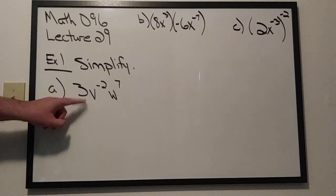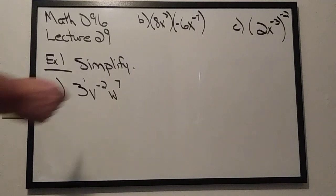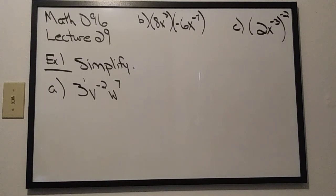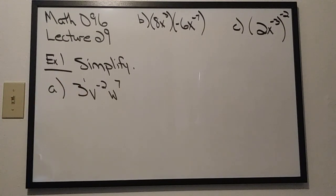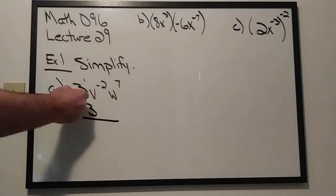When you look at this 3, it does not have a negative exponent. The 3 is really 3 to the 1st, meaning it has a positive exponent. The w over here also has a positive exponent. We talked about the idea that negative exponents move things, but if something has a positive exponent, that item won't move. This 3 is currently in the numerator of a fraction, and because it has a positive exponent, it's still going to be in the numerator.